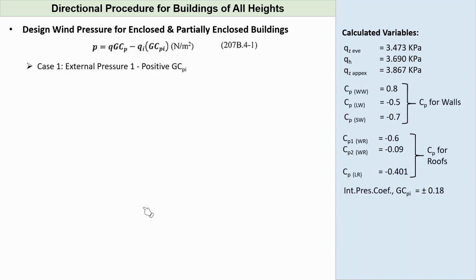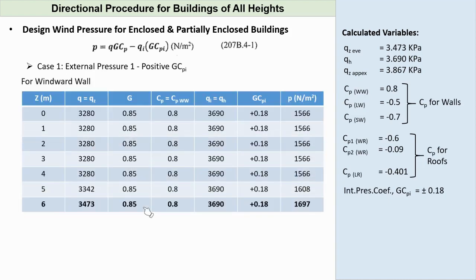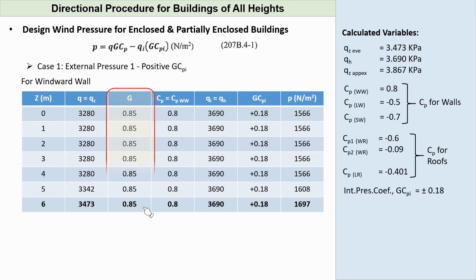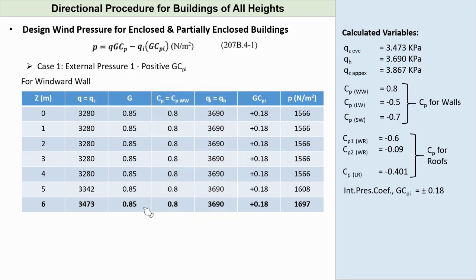Going back to Case 1, let's calculate the design wind pressure on each surface. For the windward wall, we can build the following table to clearly present the wall pressure, since pressure on this wall is variable with Z. Here we use Q equal to QZ for each elevation Z, G is constant at 0.85, CP equals the windward wall coefficient which is 0.8, QI equals QH, and GCPI equals positive 0.18.